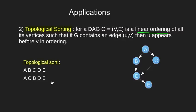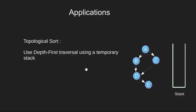Now lets look at how to do topological sorting using depth first traversal. We simply modify our DFS to have an extra temporary stack.